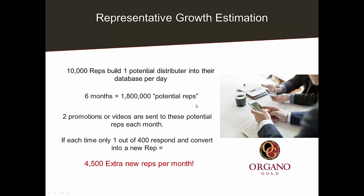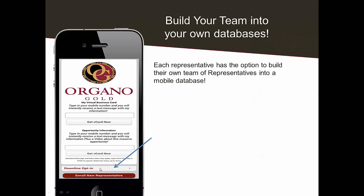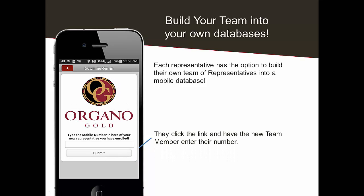Same thing with reps: build big databases of potential reps. If even 1 out of 400 respond each month, you're adding 4,500 new reps just from the remarketing effort. Team leaders that build teams of 1,000, 1,500, or 5,000 people can build their own opt-in databases and send their own communications — run their own conference calls and webinars because they've got stuff they want to say.